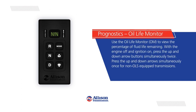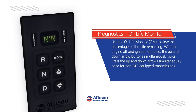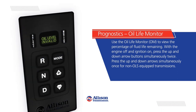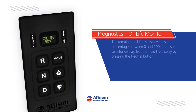Oil Life Monitor: Use the Oil Life Monitor (OLM) to view the percentage of fluid life remaining. With the engine off and ignition on, press the up and down arrow button simultaneously twice. Press the up and down arrows simultaneously once for non-OLS equipped transmissions. The remaining oil life is displayed as a percentage between 0 and 100 in the shift selector display.